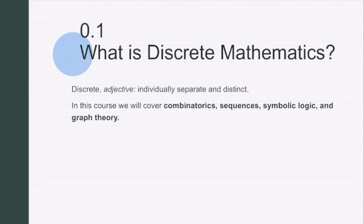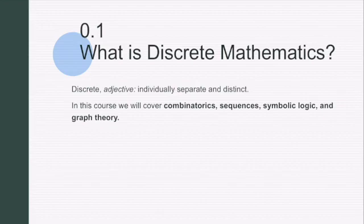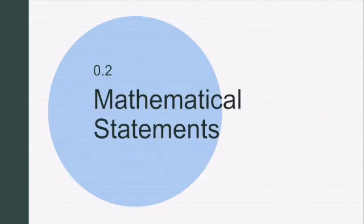So the first question is: what is discrete mathematics? Discrete, as an adjective, means individually separate and distinct. In this course, the subjects are individual and distinct concepts. We're going to talk about logic, graph theory, sequences, and combinatorics — those are our four chapters we're going to cover after this preliminary chapter.